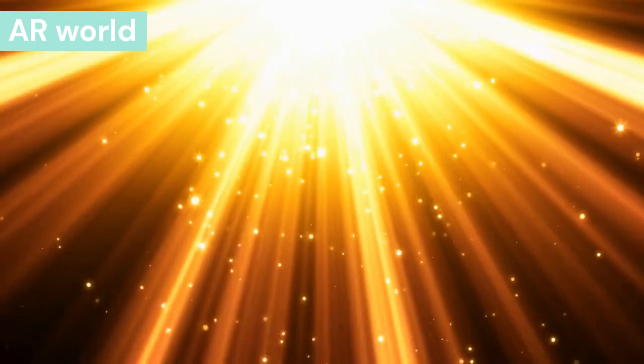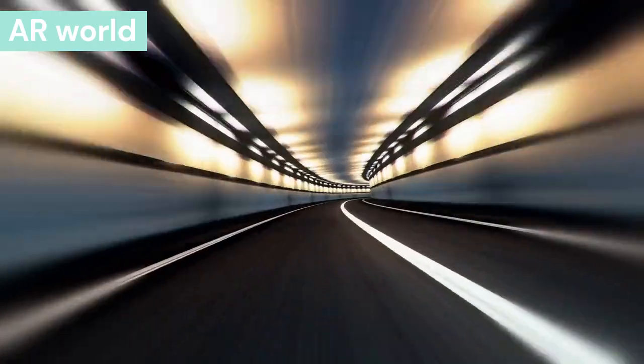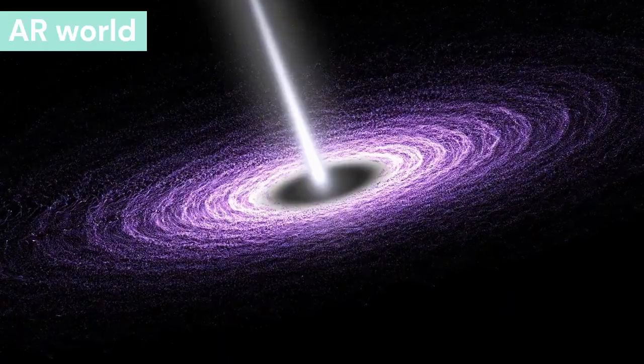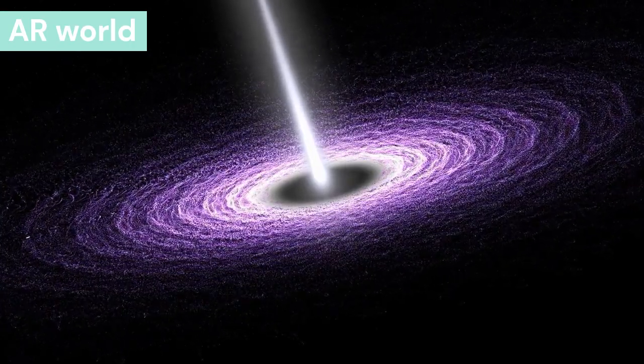Secondary waves: These are transverse waves which move like light. These are also called S waves. Their average velocity is 4 km per second. They can only pass through solid matter.